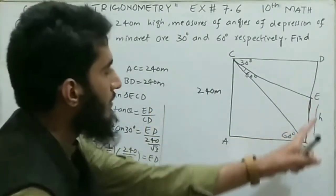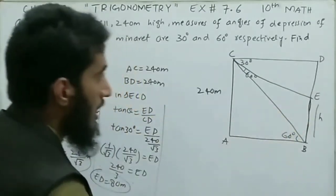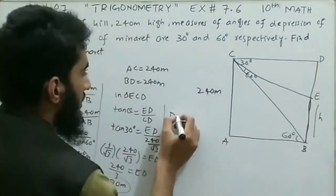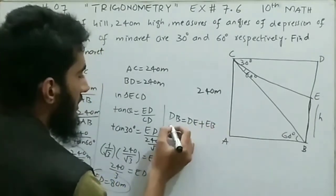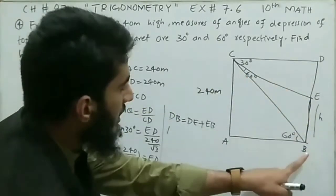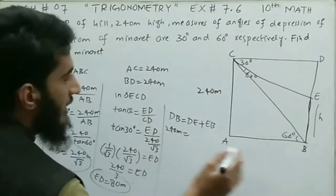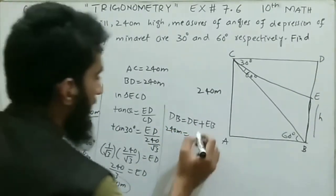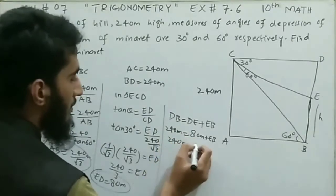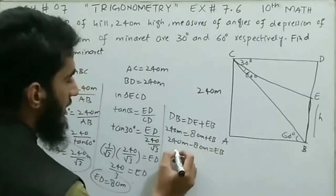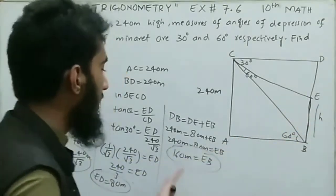Now we can find the height of the minaret, since we know DB equals 240 meters and DE equals 80 meters. DB equals DE plus EB. So 240 meters equals 80 meters plus EB. Shifting 80 to the left: EB equals 240 minus 80 equals 160 meters. The height of the minaret EB is 160 meters — this is the required and desired distance.